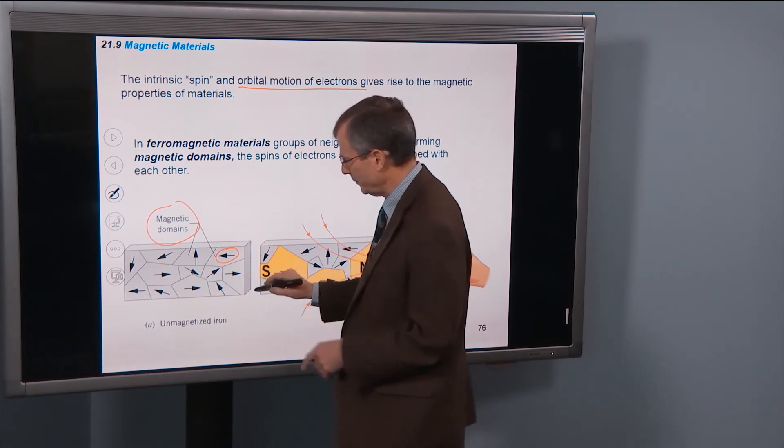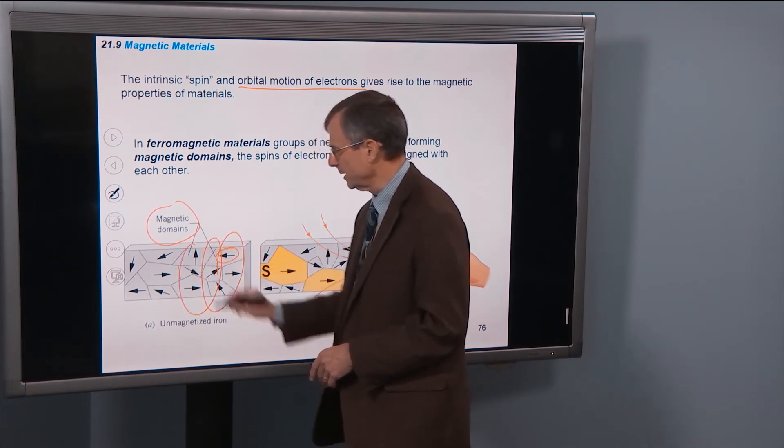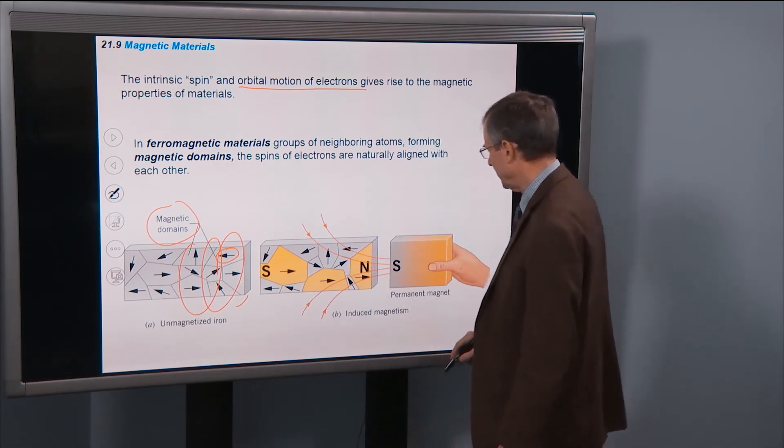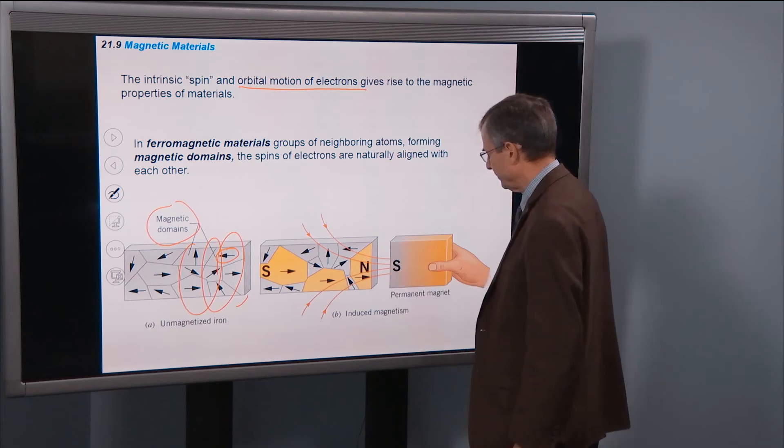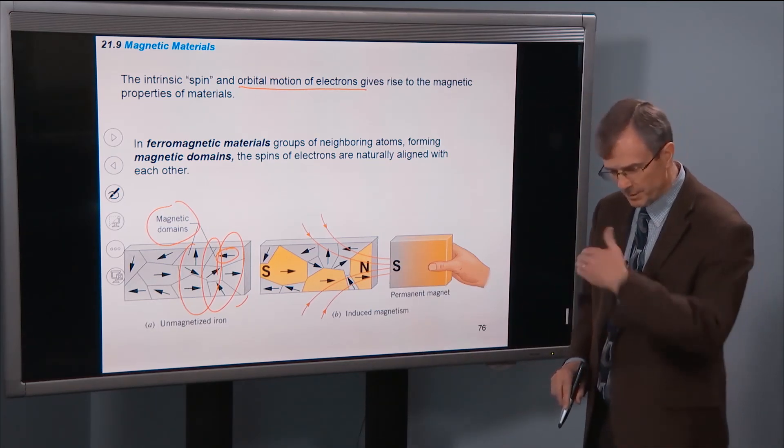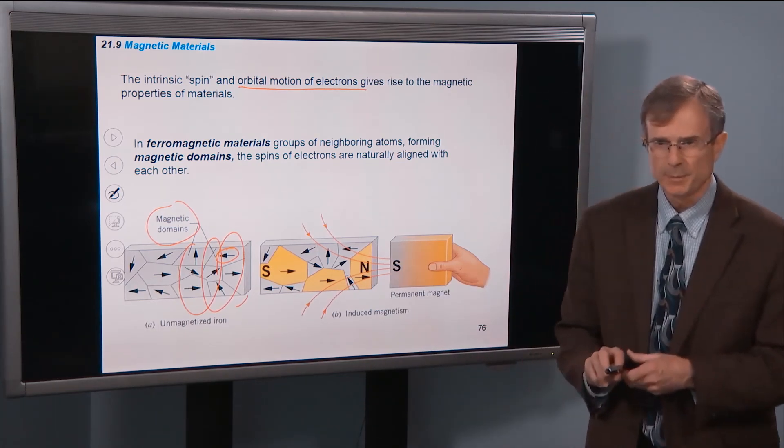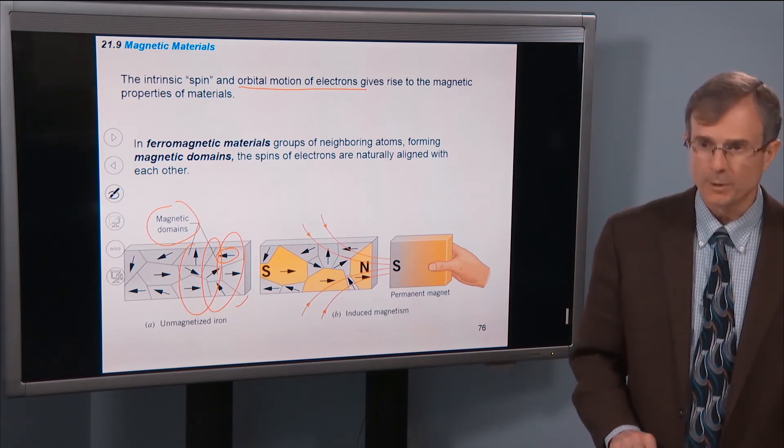If you wrap some coils around this, like we did in the nail, and you can get an orientation of the magnet, with the domains more or less lining up in the same direction to give you a permanent magnet.